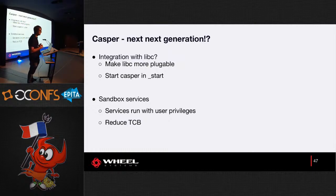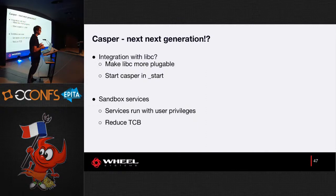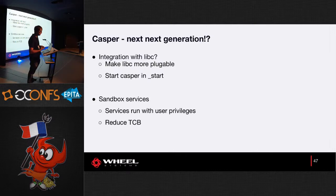We're also thinking about sandboxing the Casper services themselves. Right now Casper is a privileged process with ambient authority to everything. If someone exploits the IPC between Casper and a process, they'd get access to all data. We want to sandbox Casper itself. Everything we're doing with Casper is also about reducing the trusted code base — instead of trusting the whole libc, we only need to trust the IPC library between Casper and the process, which is a smaller attack surface than all of libc.